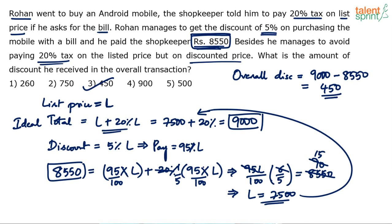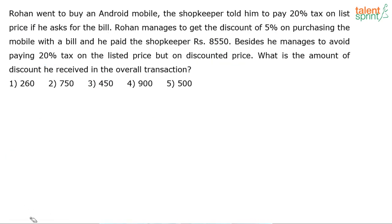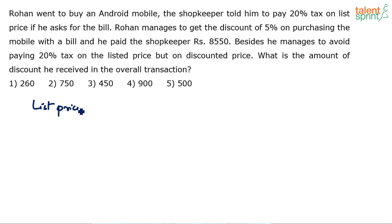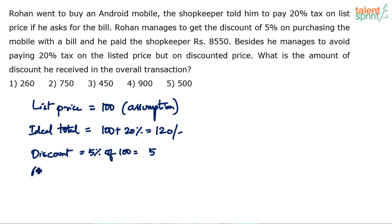Let me explain the other method. This is the conventional method where we considered the value as L and solved accordingly. But the same thing can be done by assuming the list price is 100. So, let's assume the list price is equal to 100. What should be the ideal total? In the ideal scenario, 100 rupees plus 20% tax equals ₹120. This is the ideal total. Rohan got a discount of 5% on 100 rupees, which is 5 rupees.